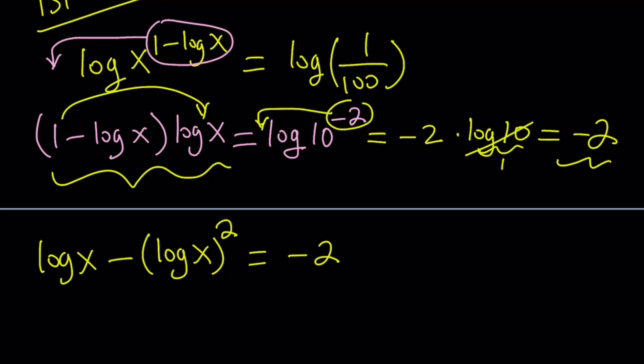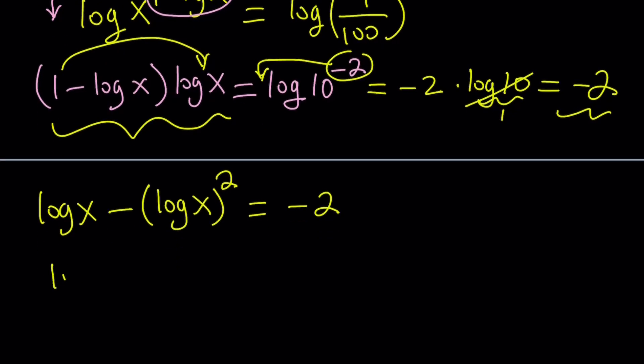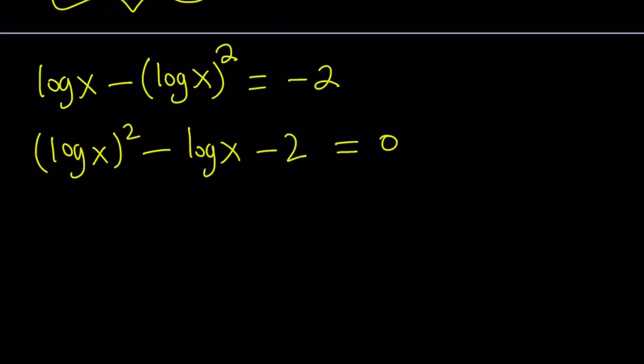Instead, write it as log x squared. And this is equal to negative 2. What does this look like? If you said quadratic, you're right about that. Let's go ahead and put everything on the right-hand side so that log x squared becomes positive. And then log x is negative, and we have a negative 2 or minus 2 equals 0. So this is factorable.